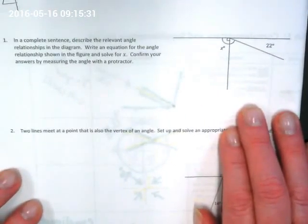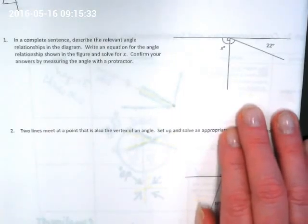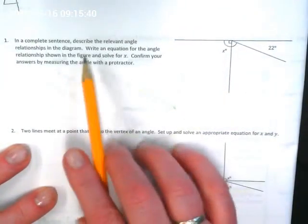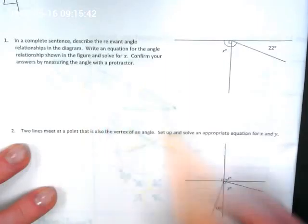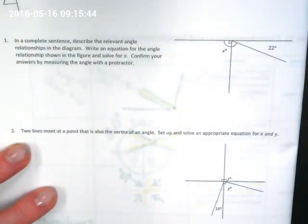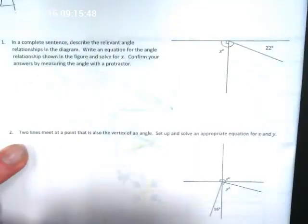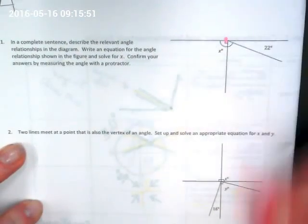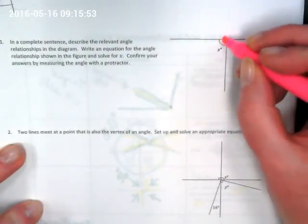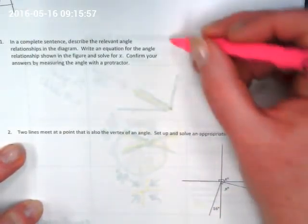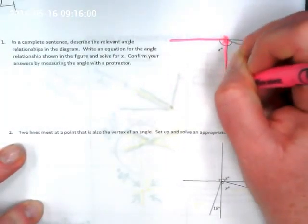If we take a look at page 4 today, the language here says in a complete sentence, but I really want you to think about math sentences. And math sentences are equations. So we're going to describe the relevant angle relationship in the diagram. When I look at this diagram here, there's a couple things that I can notice. See this mark? This little, almost like a square, means that we have a 90 degree angle.